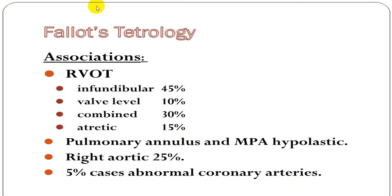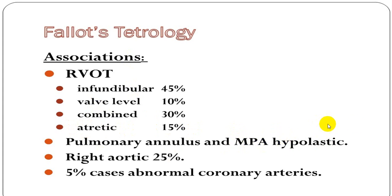Right ventricular outflow obstruction in TOF is most commonly infundibular stenosis. About 10 percent of cases have valvular stenosis, and 30 percent have combined obstruction. Very rarely, there is complete pulmonary atresia. TOF is frequently associated with mitral valve hypoplasia, right-sided aortic arch in 25 percent, and abnormal coronary artery anatomy.